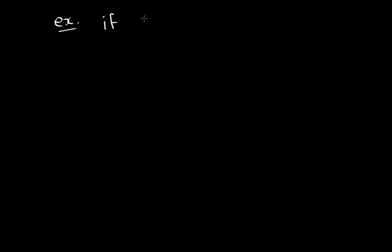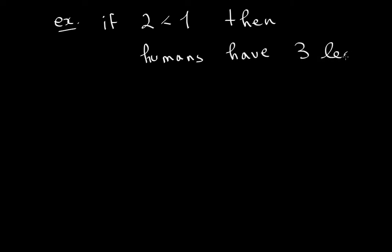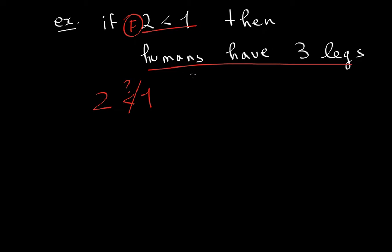Example: If two is less than one, then humans have three legs. How do you do these sorts of problems? Well, you look at the premise first. Is two less than one? No, it isn't — two is not less than one. Therefore this is false. Then you judge the conclusion: do humans have three legs? No, we don't. This is false too. Now, by what I told you, the overall statement has to be true. And you might be wondering, why? The conclusion was clearly false. Why does the statement have to be true?